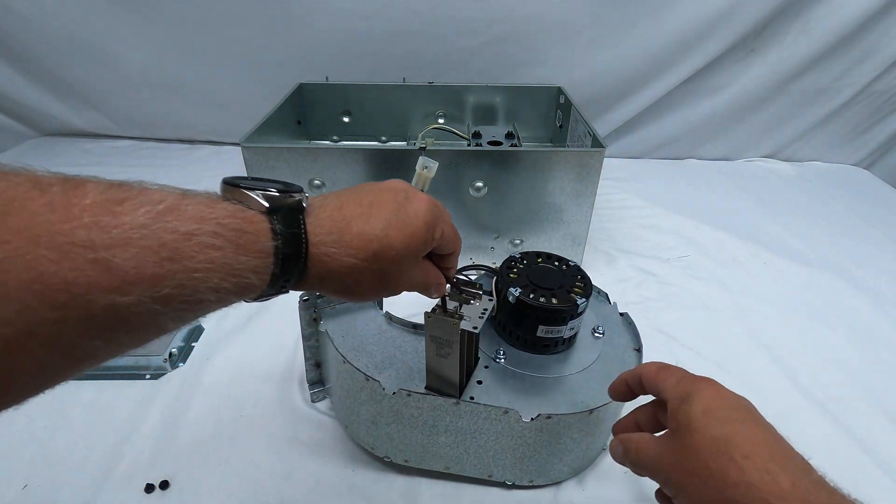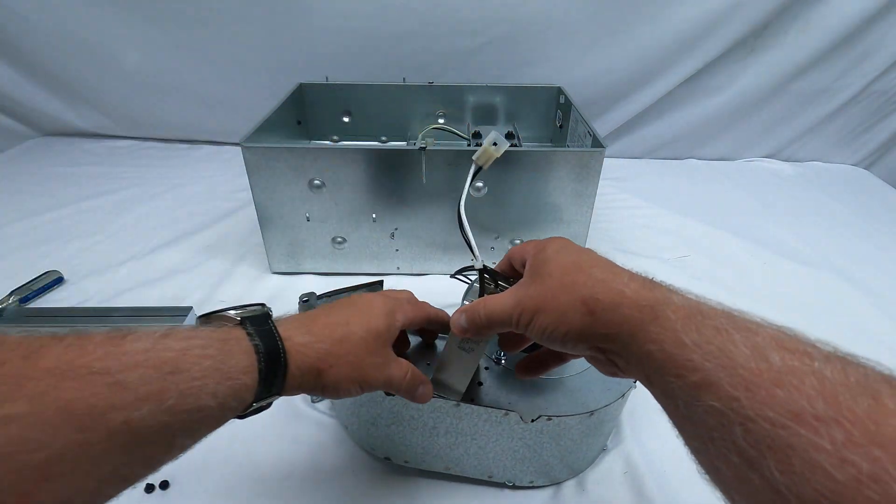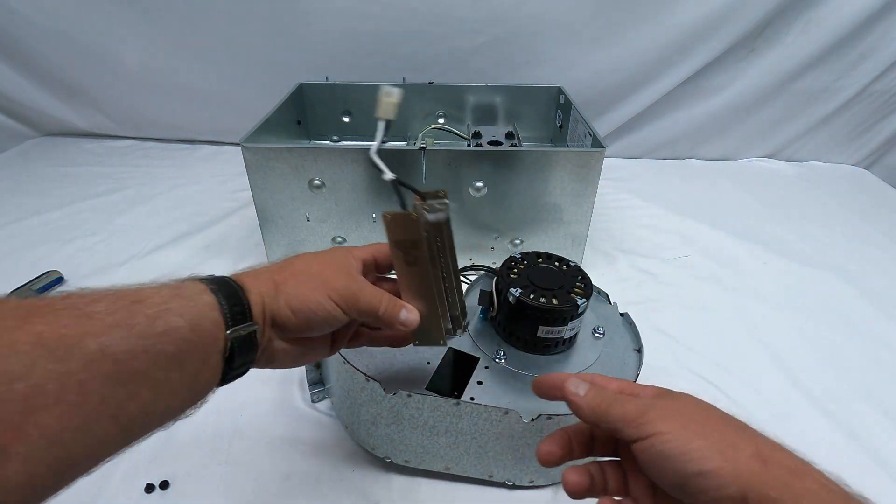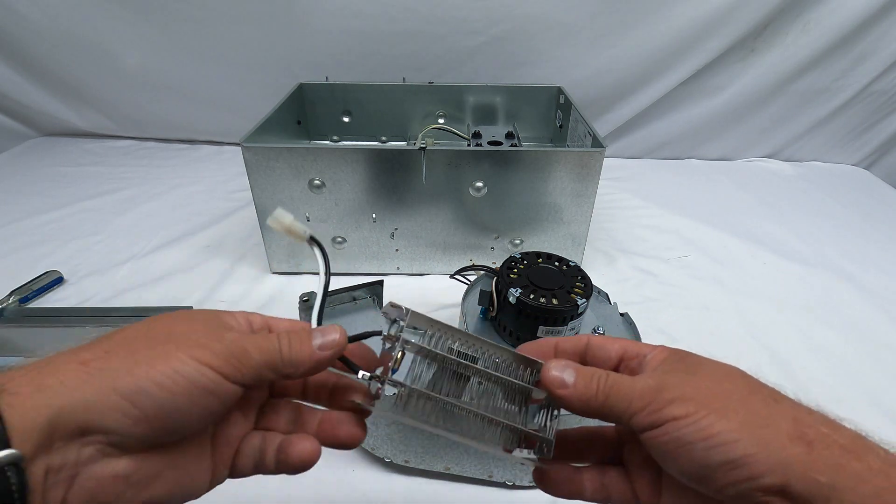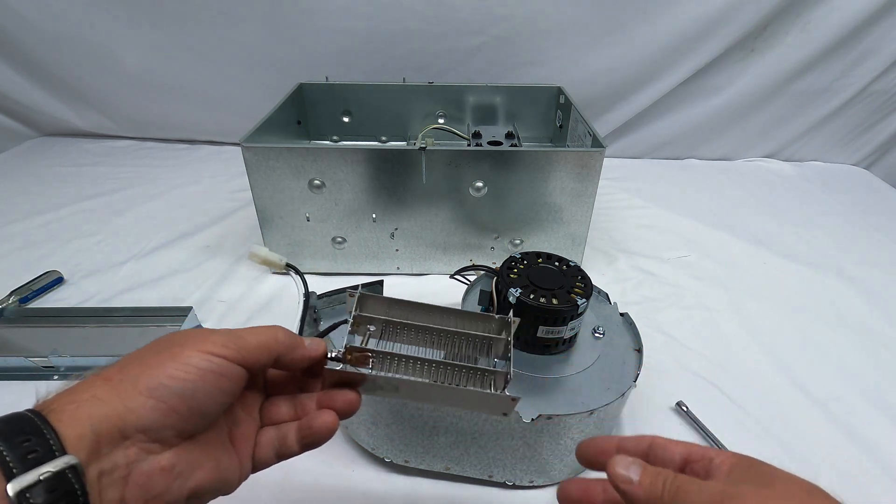And this heating element will pull right out. You have to turn it kind of on an angle because it's got a little plate in, and that's it. That's all that's involved in taking this coil out.